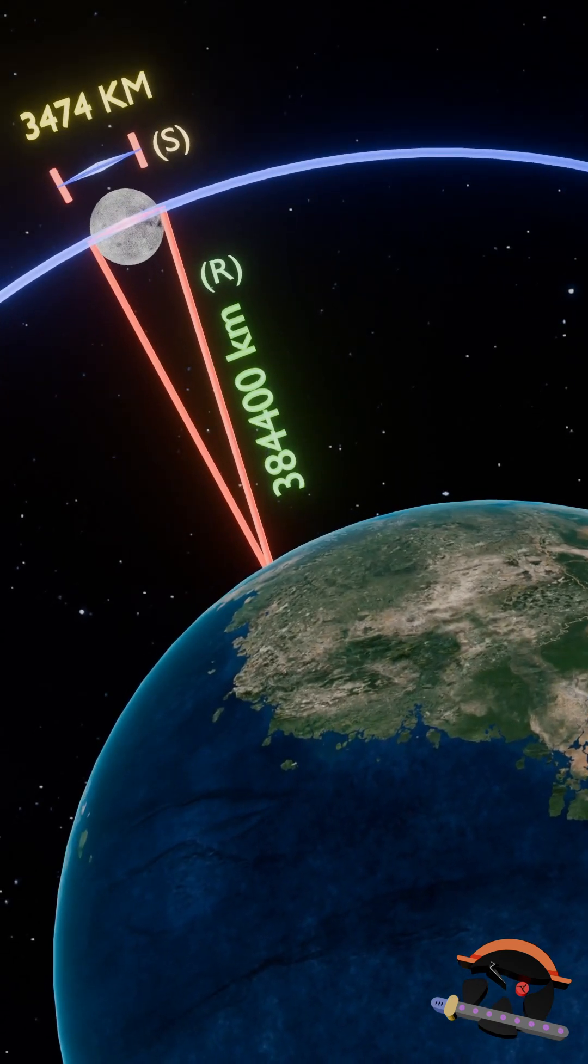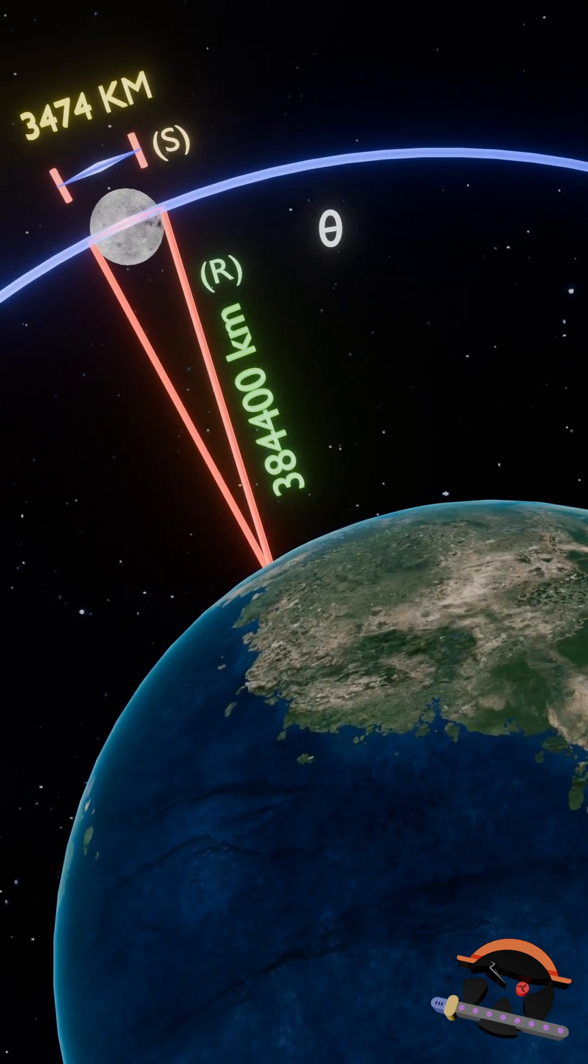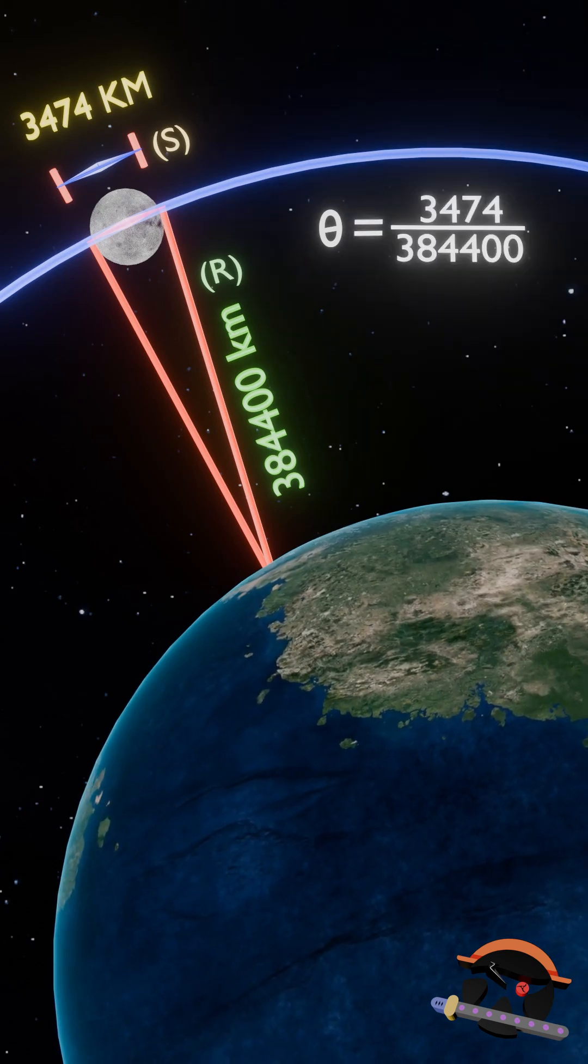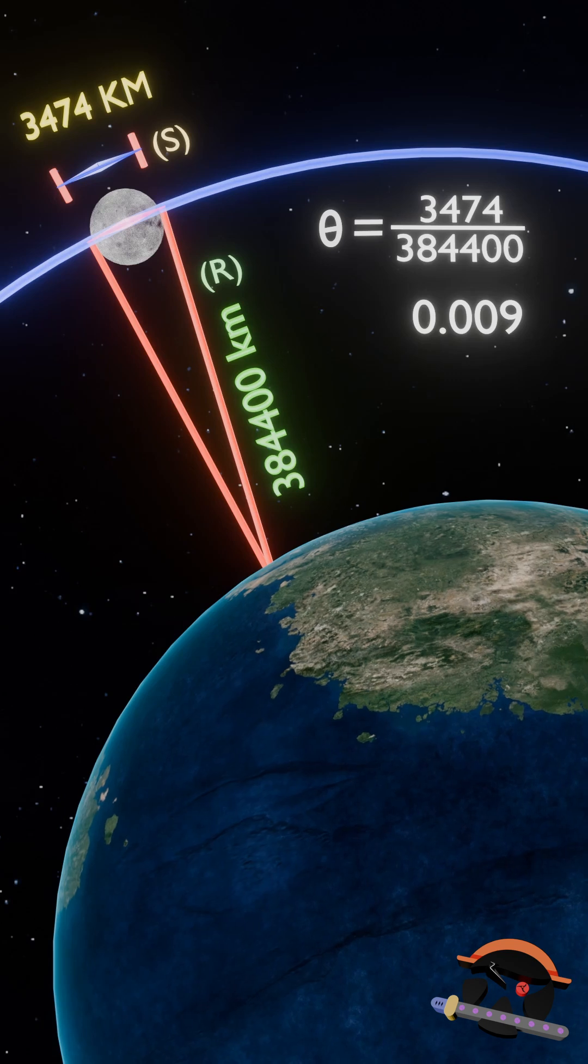So, from the previous formula that we looked at, to get the angular measurement of the moon looking from earth, we just divide the moon's diameter by the distance of the earth to the moon, which gives 0.009 as answer.